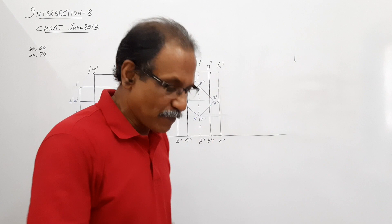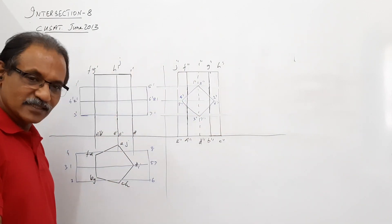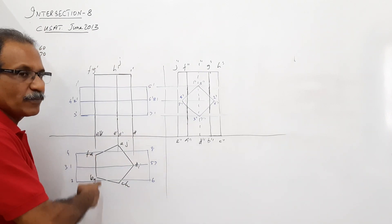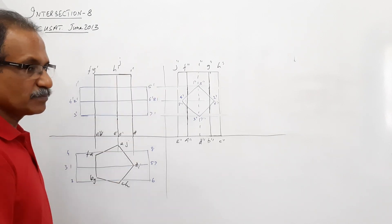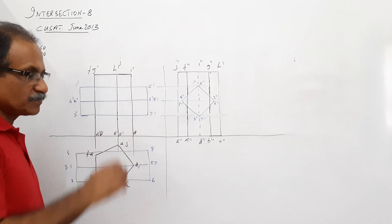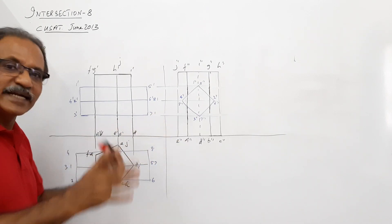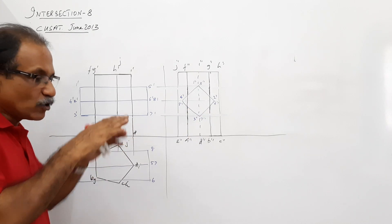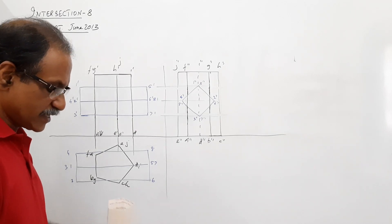The question says: a pentagonal prism is standing on its base on the ground, with a side of the base perpendicular to PP. The side is 30 and it is penetrated by a square prism of side 30, with its axis parallel to both planes and all lateral faces equally inclined to HP.